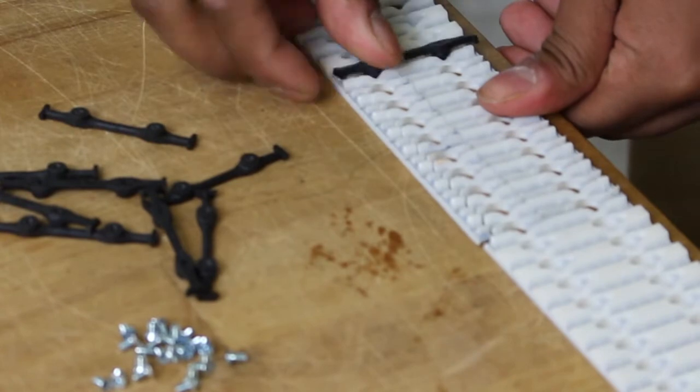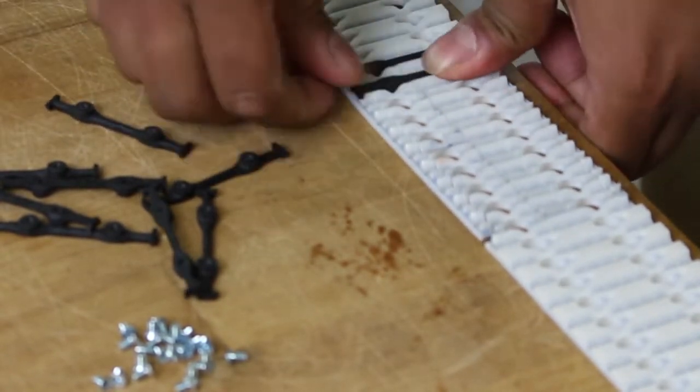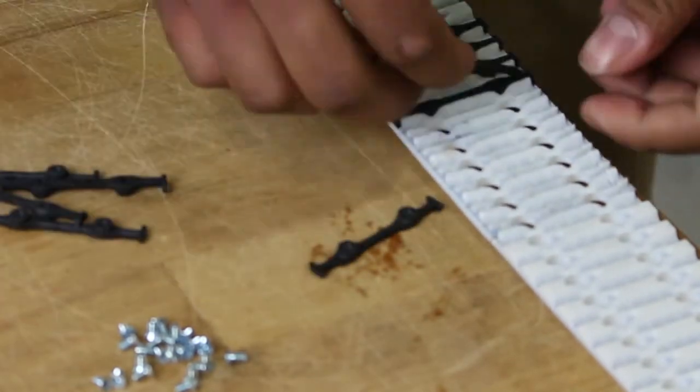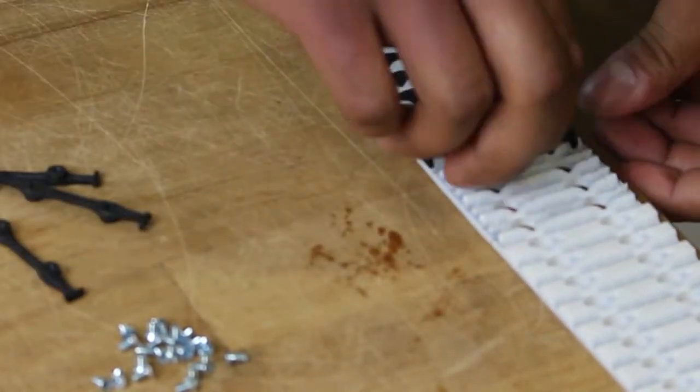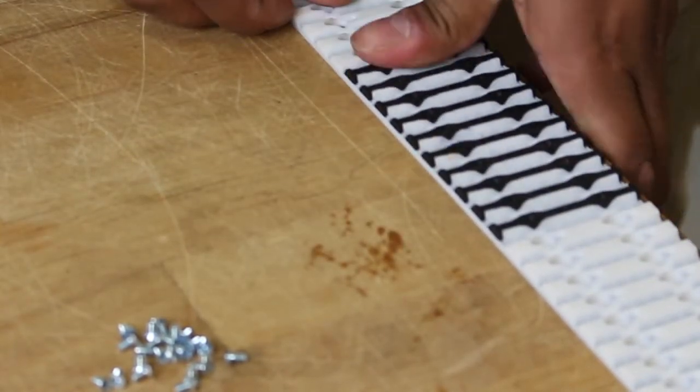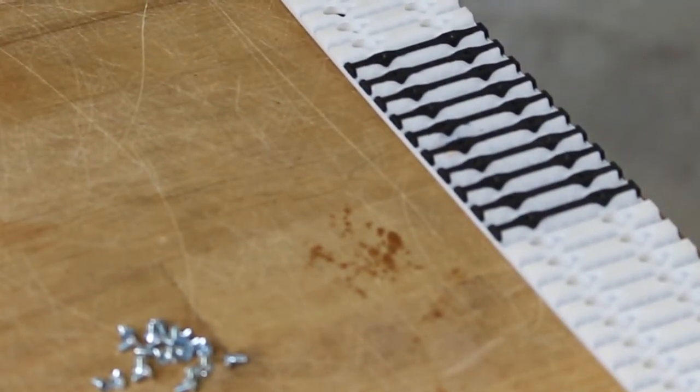Then, take the black nylon inserts and press them firmly into the allotted spaces in the two sides of the belt. Once you have inserted all of the nylon inserts, you can go ahead and flip the belt over and prepare for the other part of the installation process.